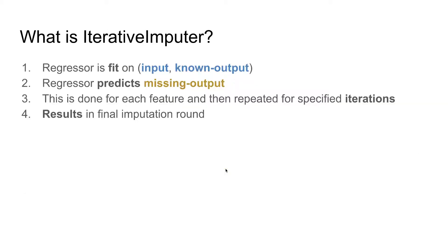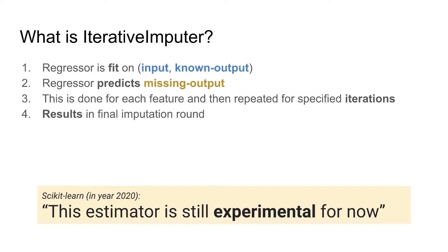In summary, the iterative imputer works in the following steps: the regressor is fit on the input and the known output — meaning rows with missing values are excluded — then the regressor predicts the missing output for that feature. This is done for each feature and repeated for a number of iterations. The result from the final iteration is used as the final imputed value. As noted in the scikit-learn docs, this is still an experimental method.